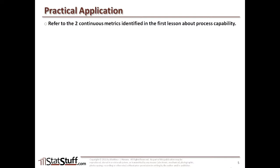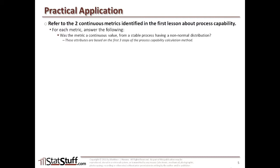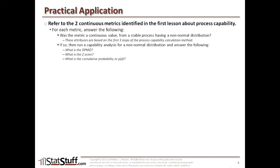Before we close this lesson, let's discuss how to apply some of these concepts in a practical way. Go back to the two continuous metrics you've used in the prior lessons regarding process capability. For each of those metrics, try to answer: is the metric a continuous value from a stable process, yet having a non-normal distribution? Those are the first three elements we look for in the first three steps. If so, try to answer these questions based on the process capability transformed using the Box-Cox transformation: what is the DPMO and Z-score? What's the cumulative probability or percent defective? What are the CPK and PPK? Based on those results, would you conclude the process is capable or non-capable? That wraps up this lesson. Check out statstuff.com for more resources. I'm Matt Hanson, thanks for watching.